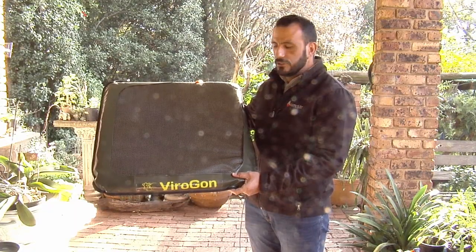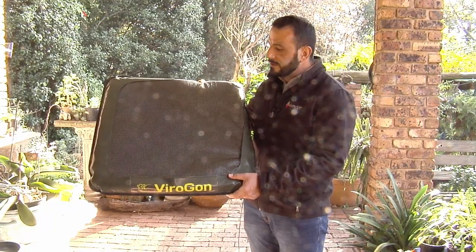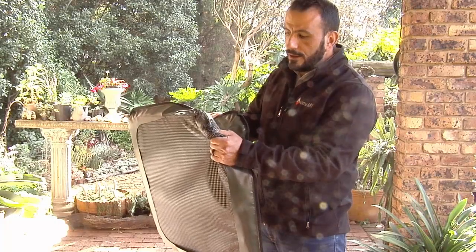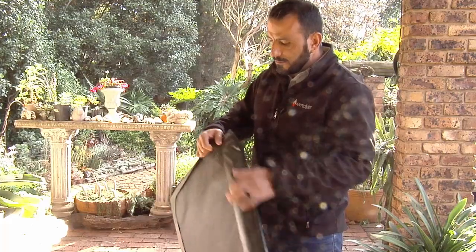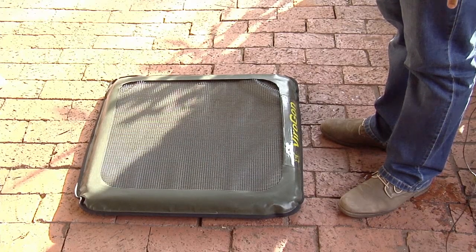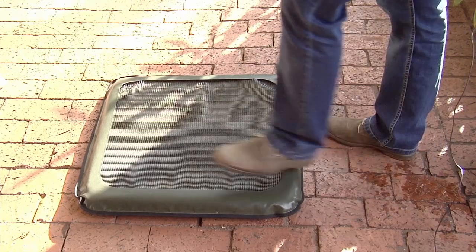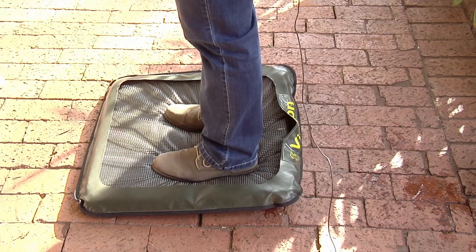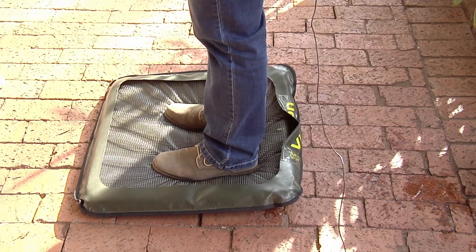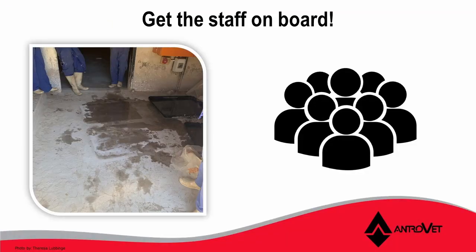Another product you can use is the Virogon disinfection mat. This is a very durable disinfectant mat with a nice mesh that keeps organic matter out of the disinfectant. It has a removable sponge that you can clean out nicely, and it is totally waterproof when you pour your disinfectant onto it. You place the Virogon disinfectant mat on the ground, pour disinfectant onto it, and as you step onto it, it creates a soapy foam layer onto your boot that will disinfect your boot to great effect. It's very important to get your staff on board so they understand why they are doing what they are doing.